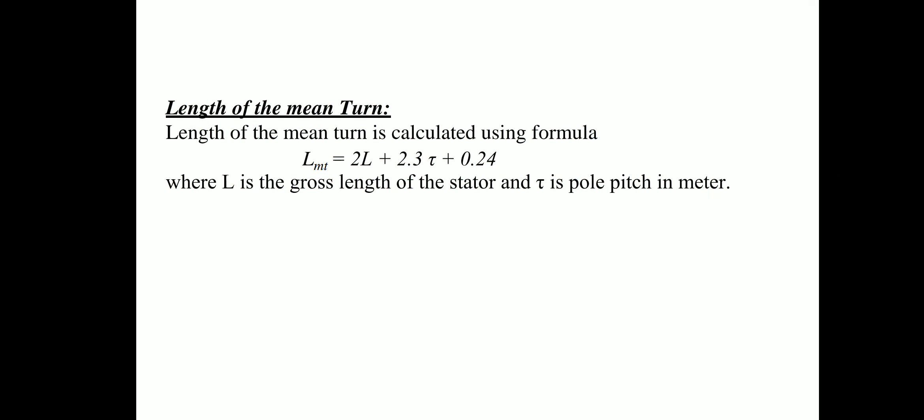The length of mean turn is calculated using: Lmt = 2L + 2.3τ + 0.24, where L is the gross length of the stator and τ is the pole pitch in meters.